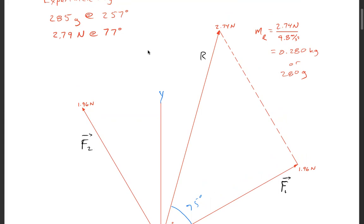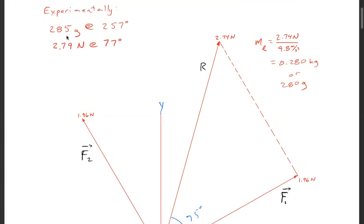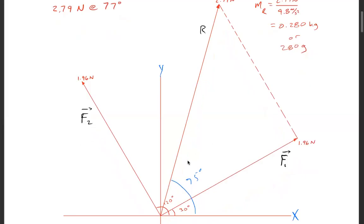So experimentally I got 285 grams at 77 degrees. Graphically I got 280 grams at 75 degrees. And that's how you do the graphical method.